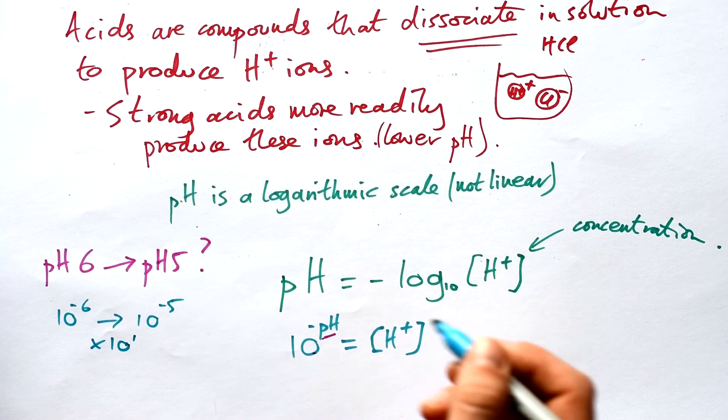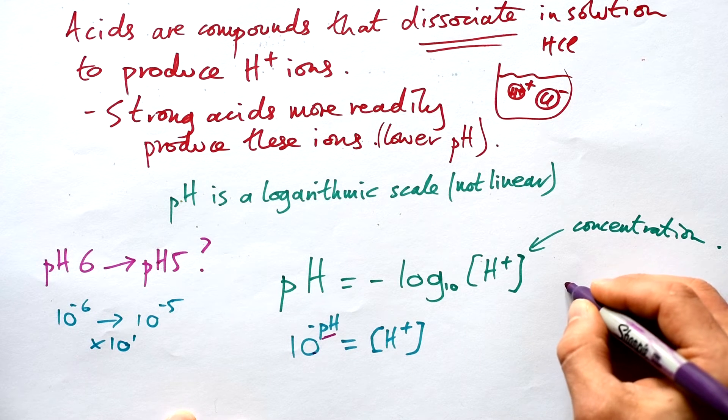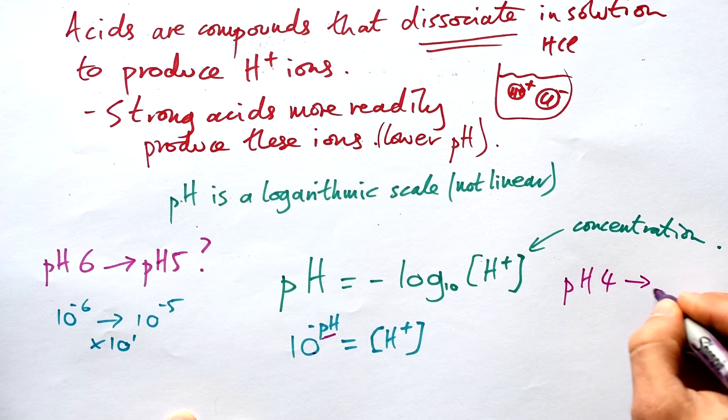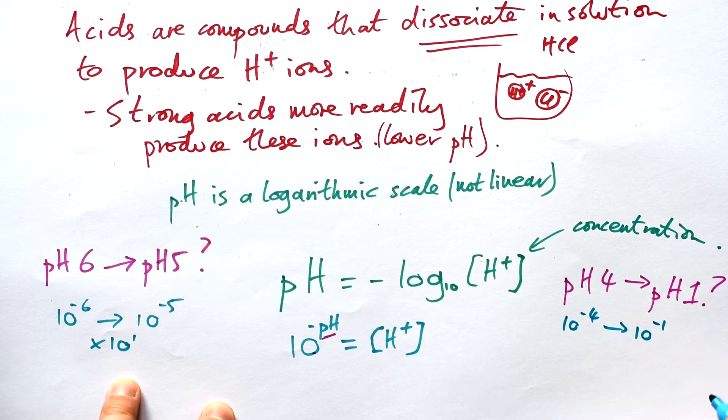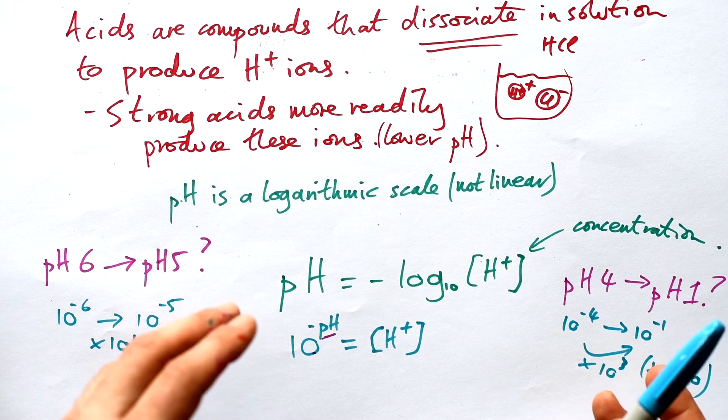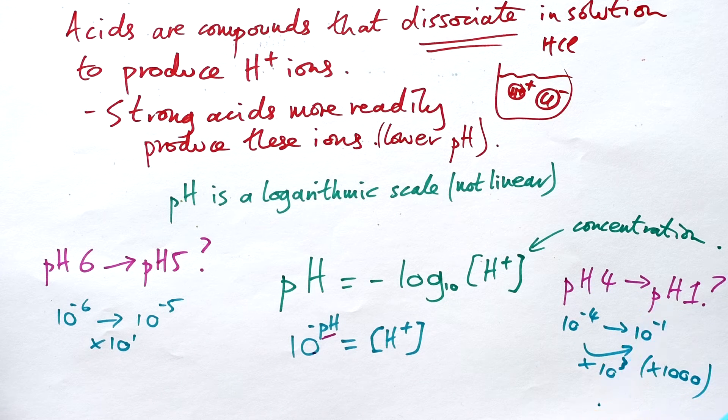We've timesed by 10^1. Let's have a look at another example. What if we wanted to go from pH 4 to pH 1? Well, we've gone from 10^-4 to 10^-1. What have we had to times by to get from there to there? We've had to times by 10^3. In other words, we've had to times by a thousand. So the concentration of hydrogen ions in pH 1 is a thousand times greater than it is for pH 4. That's the kind of question that you would get asked in your exam. How does the concentration of hydrogen ions in one acid or alkali compare to the concentration of hydrogen ions in another?